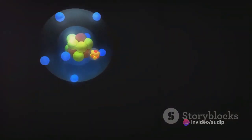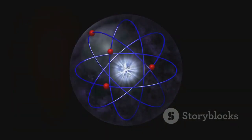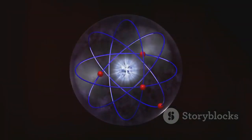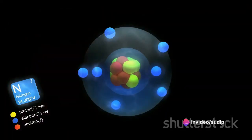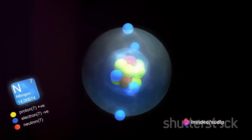But what's in the nucleus you ask? Well it's made up of even tinier particles called protons and neutrons. Protons carry a positive charge while neutrons have no charge. Together they make up the bulk of an atom's mass.